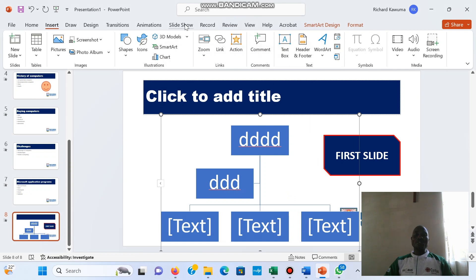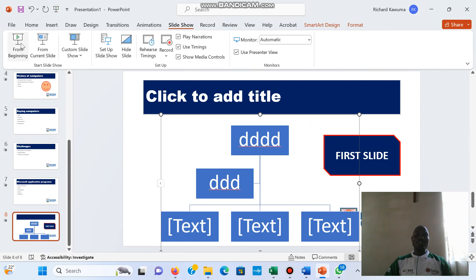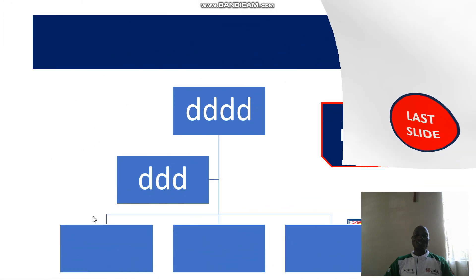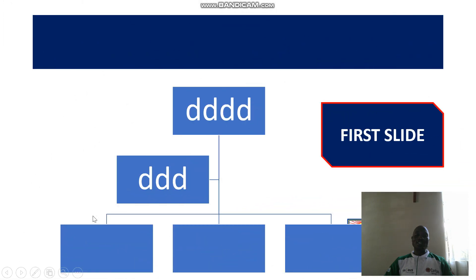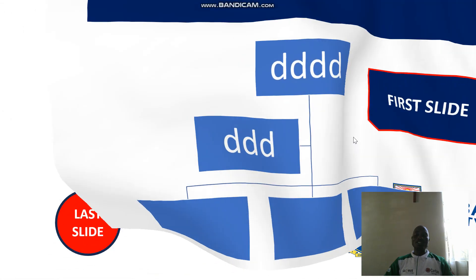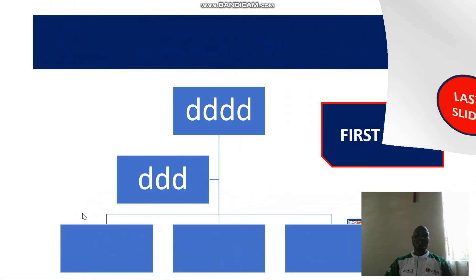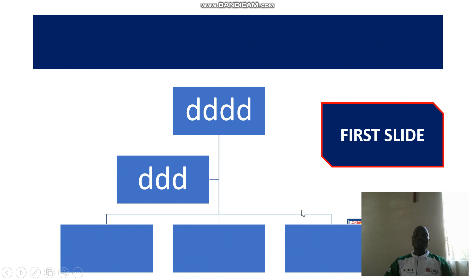Let's run our show again from the beginning. When I click on the 'Last Slide' button it takes me to the last slide, and when I hover my mouse over the 'First Slide' button it takes me back to the first slide. That's how we add buttons in PowerPoint.